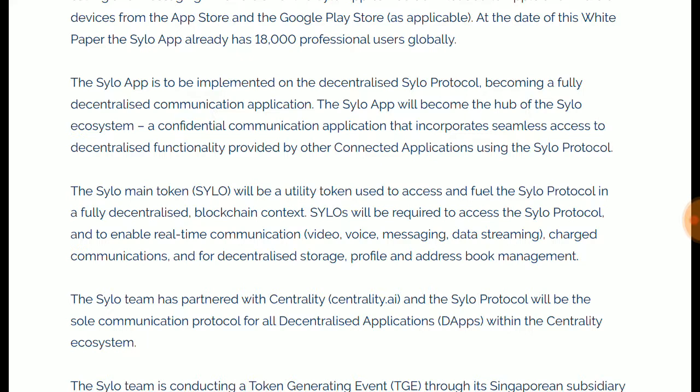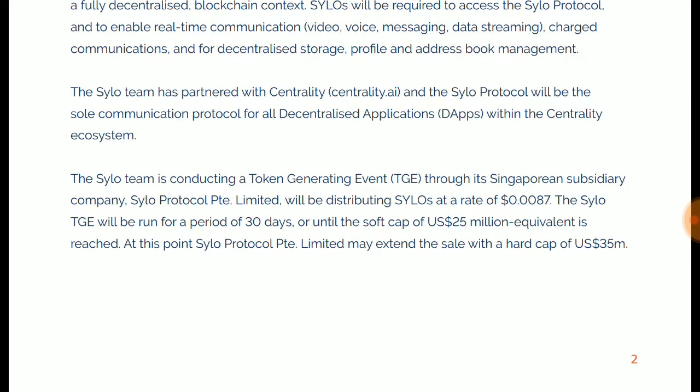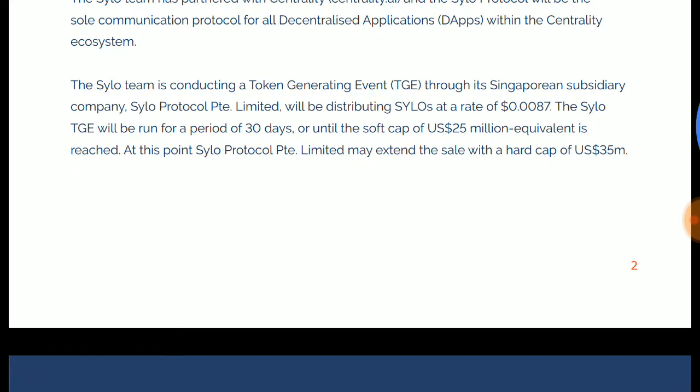The Silo app will become the hub of the Silo ecosystem. The main token sale is coming up — the utility token is called Silo. You will access the full Silo Protocol with it. The Silo team has partnered with Centrality dot AI, and Silo Protocol will be the sole communication protocol. The Silo team is conducting a token generating event, TGE, through a Singaporean subsidiary company.